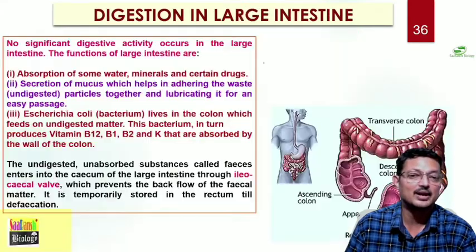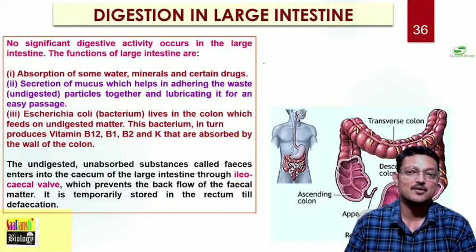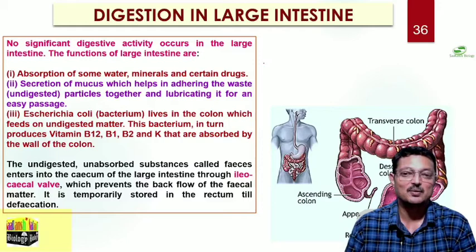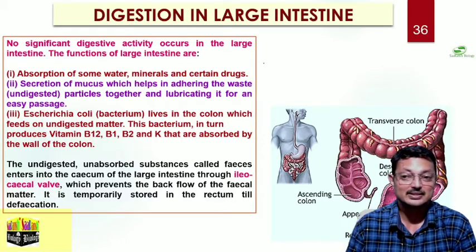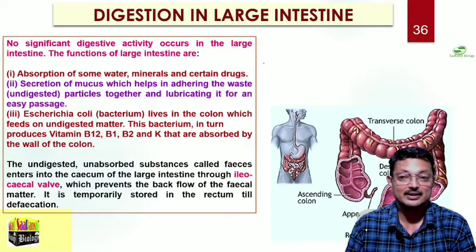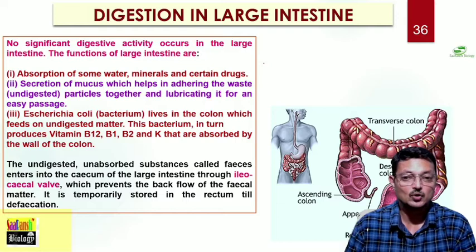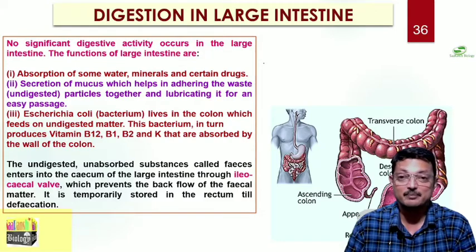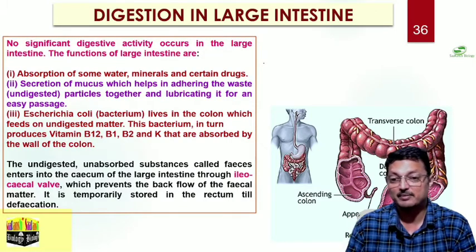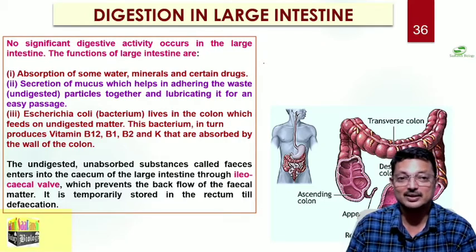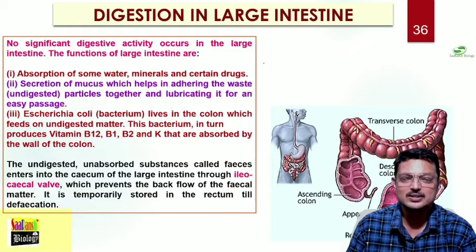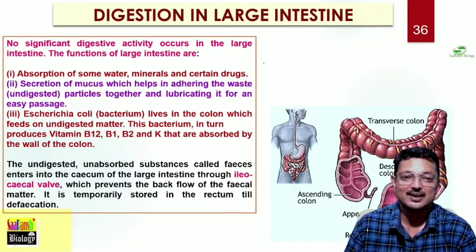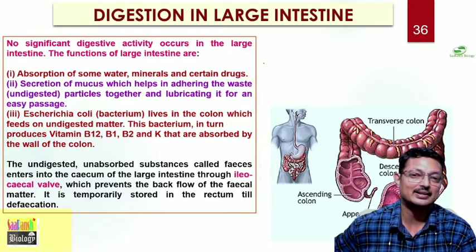The large intestine is not a site of digestion but of absorption - absorption of water, minerals, and certain drugs. Mucus is secreted, which helps in adhering the waste undigested particles together. There are bacteria present in the colon and the undigested matter depends on these bacteria. These bacteria synthesize vitamins - vitamin B12, vitamin B1, vitamin B2, and vitamin K. This is important because it is a case of mutualism - helping each other. Ultimately the undigested food material is moved out through the anus.